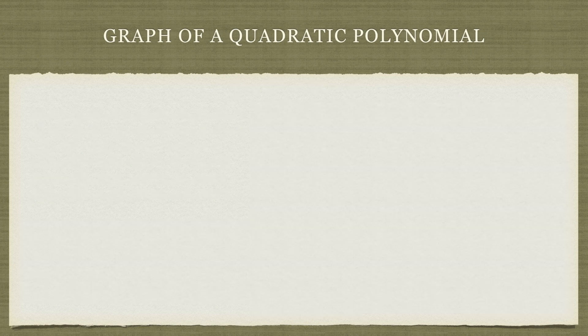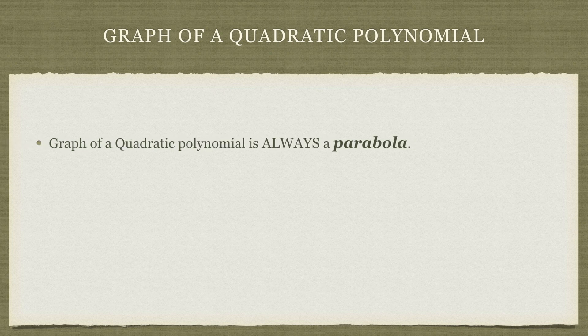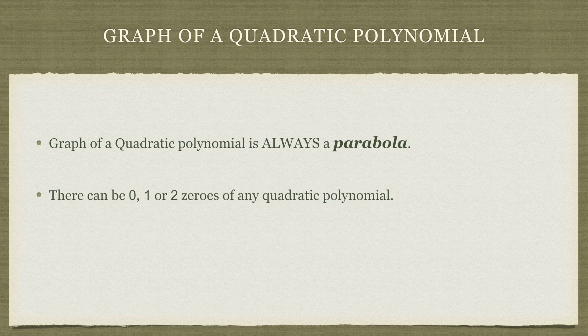Let's quickly recap some of these points we have learned. Graph of a quadratic polynomial is going to be always a parabola. Second, there can be zero, one, or two zeros of any quadratic polynomial.